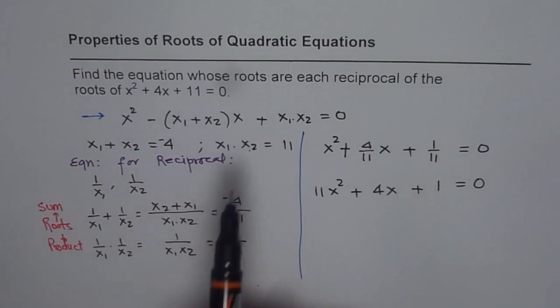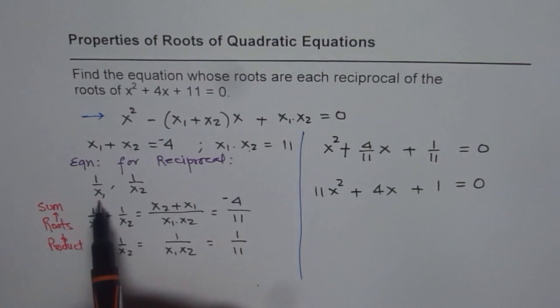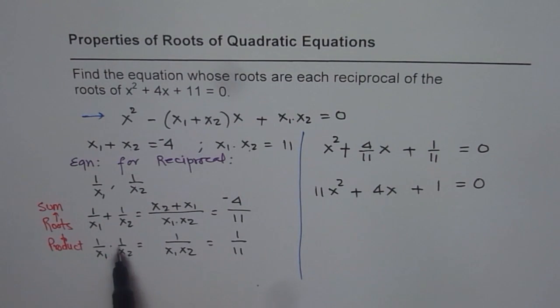Now, the question says the new equation should have reciprocal roots. That means 1/x₁ and 1/x₂ are the roots. Their sum is 1/x₁ + 1/x₂ = (x₁ + x₂)/(x₁x₂) = -4/11. And the product is 1/x₁ times 1/x₂ = 1/(x₁x₂) = 1/11.